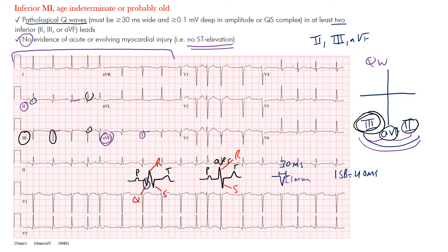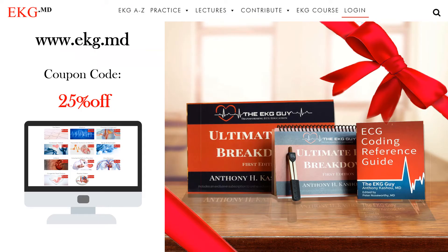In that case, you do have a Q wave present — those are the ones we're looking for. So in inferior MI, age indeterminate or probably old, you're looking for pathological Q waves in the inferior contiguous leads — at least two of them — and no evidence of acute or evolving myocardial injury, meaning no ST segment elevation in those leads.